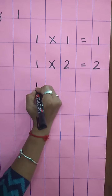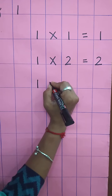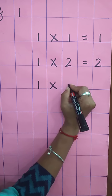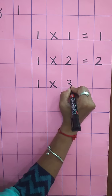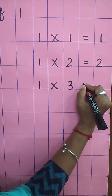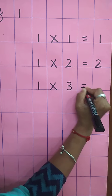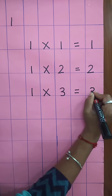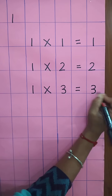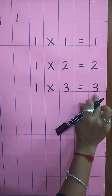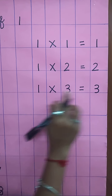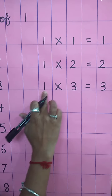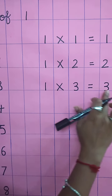Write down one. One, multiplying sign. Write here three. Equal sign. And again, write here three. One three's are three. Speak and write, children. One three's are three.